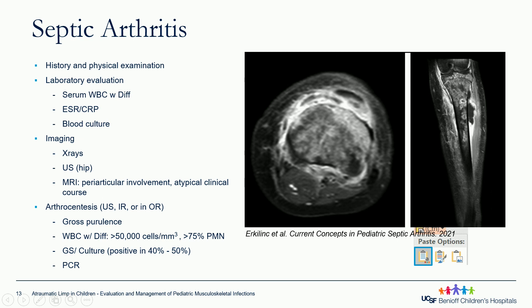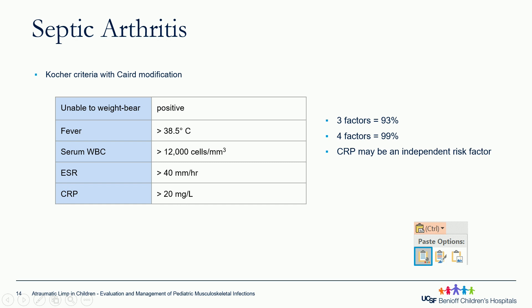PCR in atypical cases is useful, especially if you're suspecting Kingella kingae, for example. The Kocher criteria is a commonly used four-variable criteria: inability to bear weight, fever greater than 38.5°C, peripheral white count greater than 12K, and ESR greater than 40. Having three out of the four factors gives a positive predictive value of approximately 93%. Having all four is almost 100%. So it's very helpful and we commonly use it.